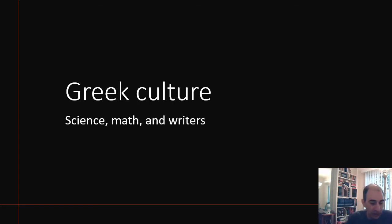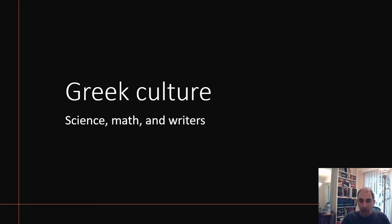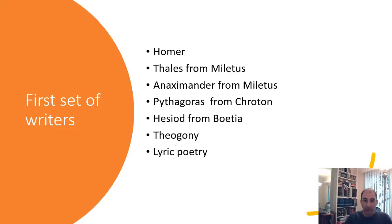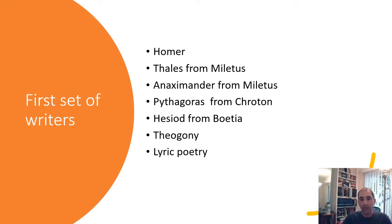Welcome back. We're going to wrap up the story of the Greek world today by looking at Greek culture - the science, the math, the writers that are part of Greek history. While we spent a lot of time on politics and wars, I want you to know a few things about the Greek writers and some key people from ancient Greek history. Let's start with some names - there are non-Athenians and some earlier people.